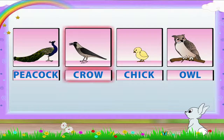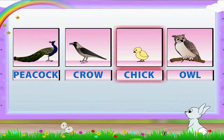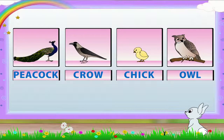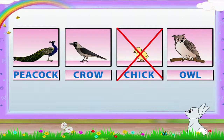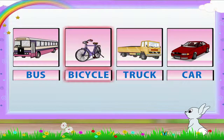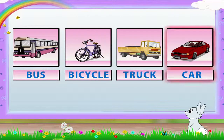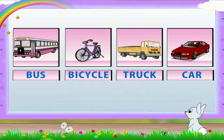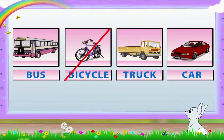Peacock, crow, chick, and owl are all birds. Chick is the odd man out as it is the young one of a bird. Bus, bicycle, truck, car - you are right, Rainbow! They are all means of transport.